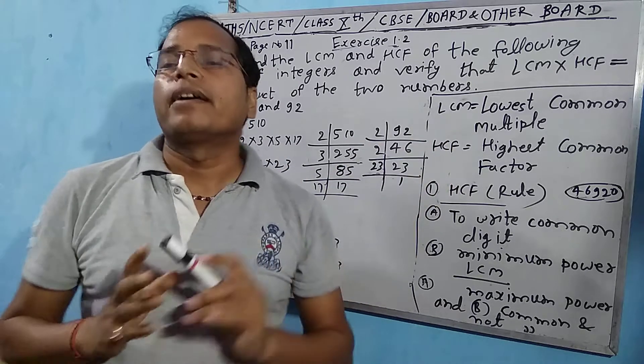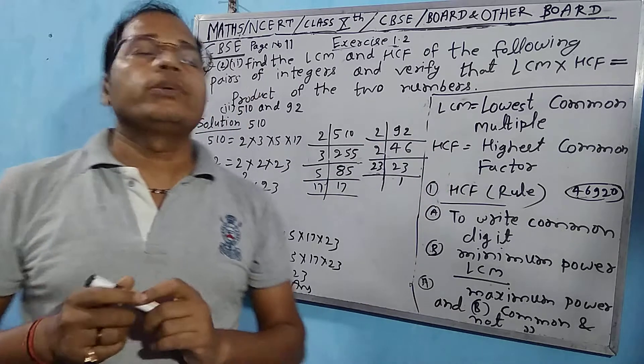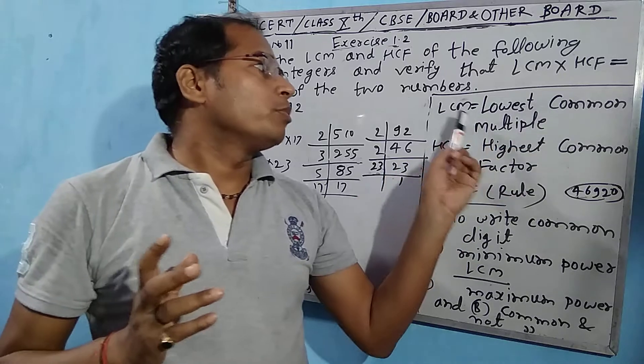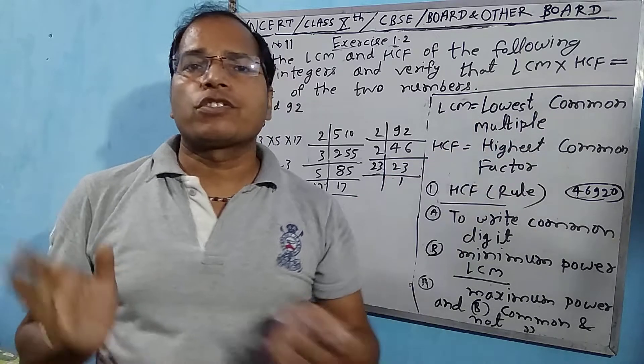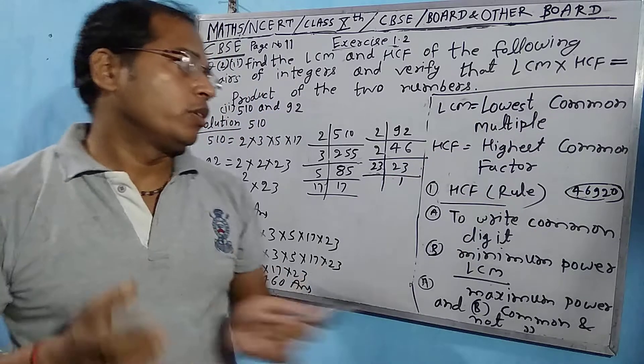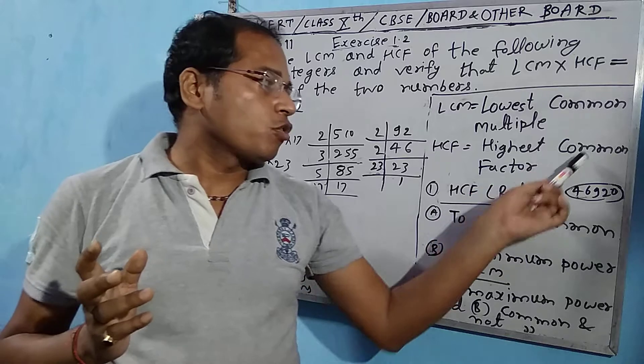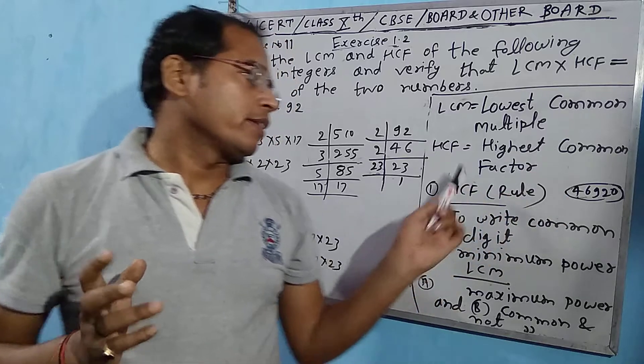What is the rule for HCF and LCM? The full form of LCM is Lowest Common Multiple, and HCF stands for Highest Common Factor.